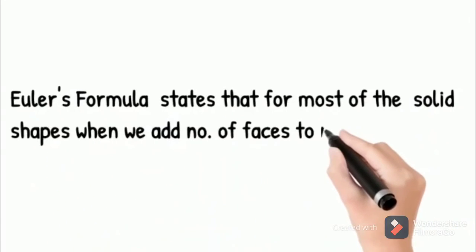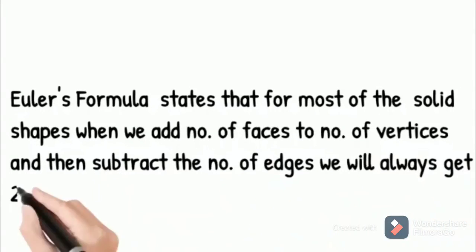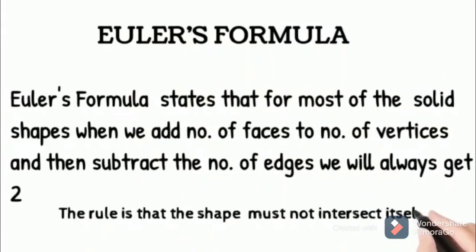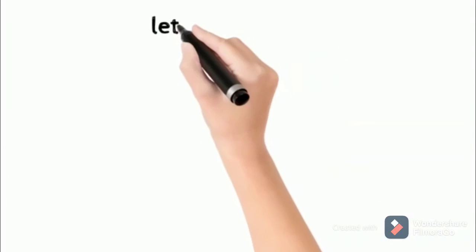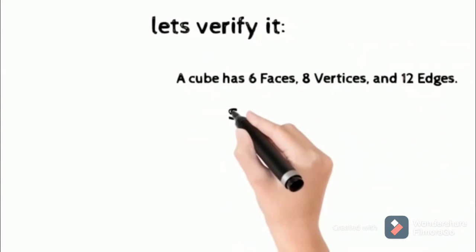Now we will look at Euler's formula. It states that for most solid shapes, when we add the number of faces to number of vertices and then subtract the number of edges, we will always get two. There is an exception: the face must not intersect itself.